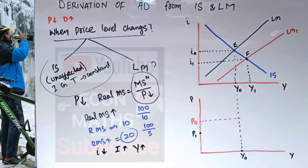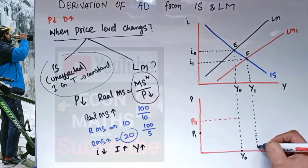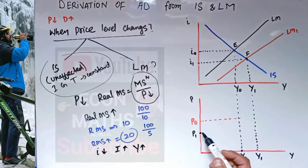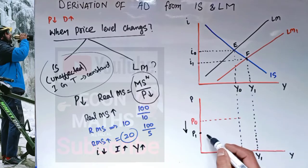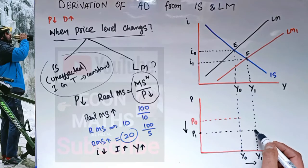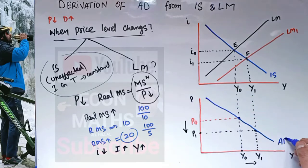When the interest rate decreases from i₀ to i₁, investment will increase. When investment increases, correspondingly output will increase from Y₀ to Y₁. Now when we take this Y₁ on the second graph, corresponding to the output level Y₁ the price level has fallen from P₀ to P₁ — when price level decreased, output level increased. Joining these two points we get a downward sloping aggregate demand curve.